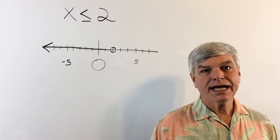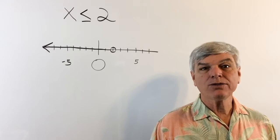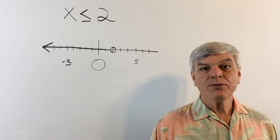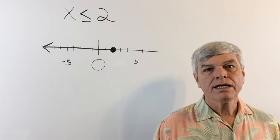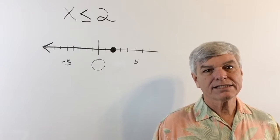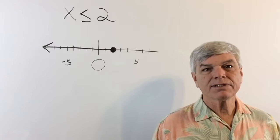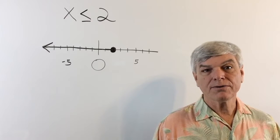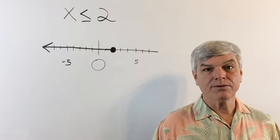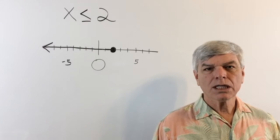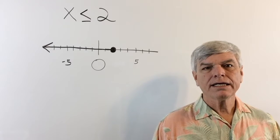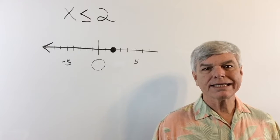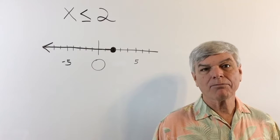Now, what if it had said x is less than or equal to 2? Then you would take that circle and color it in — just like that. That tells us the same thing as the less than symbol, except that it can be 2. It's not just starting at 2; it can equal 2.